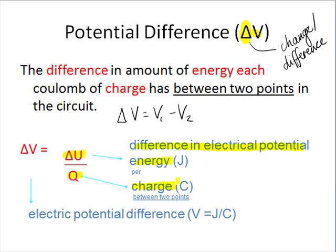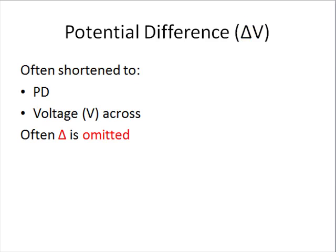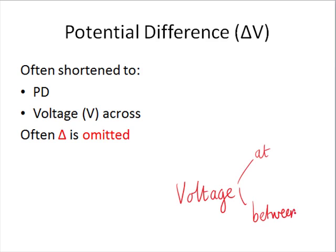Often we are a bit lazy and call both potential and potential difference 'voltage,' because the unit of both is joules per coulomb, which equals volts. Unfortunately this can be confusing, but voltage at a point means potential, while voltage between two points or across a component means potential difference.